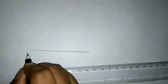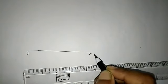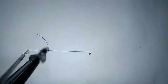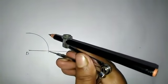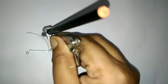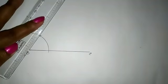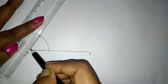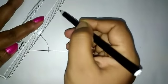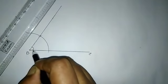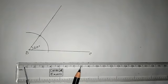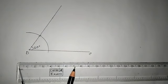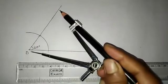And angle B is 60 degrees. This is angle B, 60 degrees, and AB is 7 centimeters.